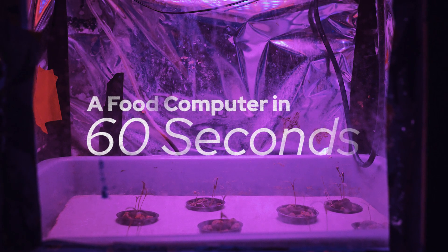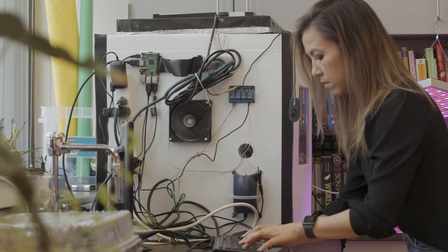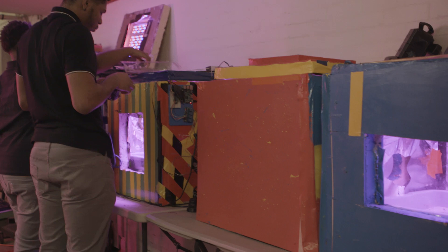A food computer is a tabletop greenhouse that's climate controlled with computer programming and robotics. It's essentially a box of foam.